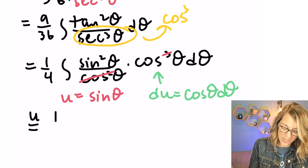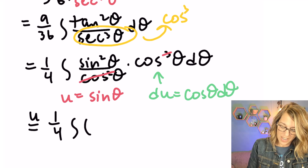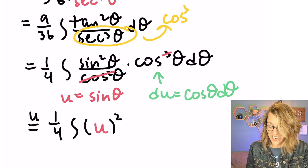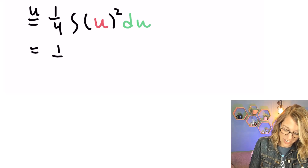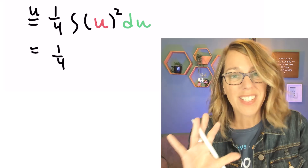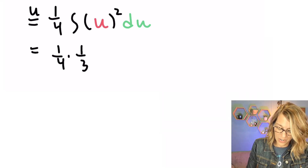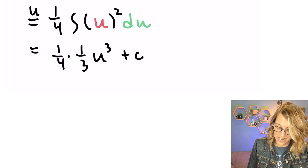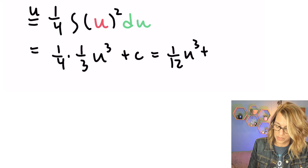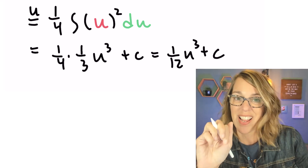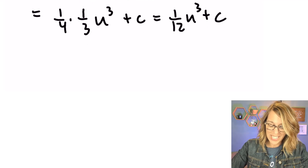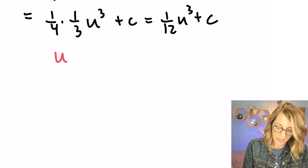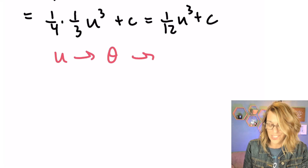Everything is now in terms of u: one-fourth times the integral of u squared du. That's a straightforward power rule, giving one-fourth times one-third u cubed plus C, which equals one-twelfth u cubed plus C. However, we're not at our final answer — we need to convert back to the original variable x, going from u back to theta and then back to x.